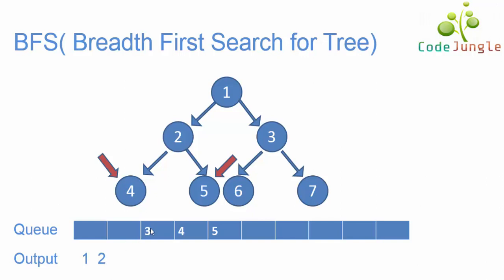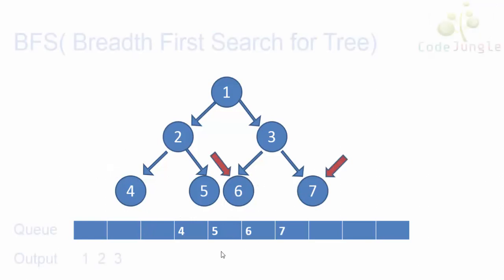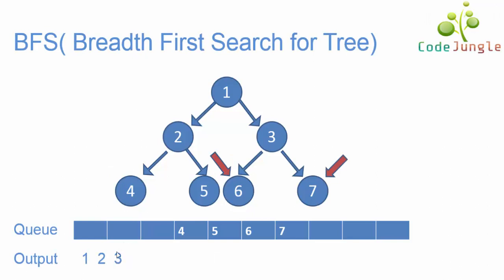The next step is to check the next element in the queue. The next element is three. We check the child elements for three, which are six and seven. We push six and seven into the queue and take out three to display in the output.